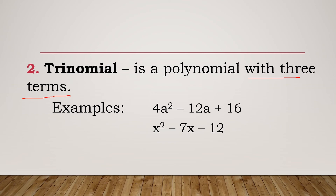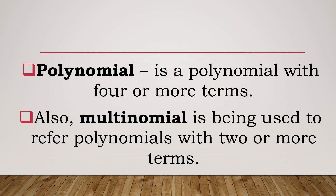Next is trinomial — a polynomial with 3 terms. For example, 4a² - 12a + 16 has three terms: 4a², -12a, and 16. Also, x² - 7x - 12 is another example of a trinomial. The word 'polynomial' is also used to name polynomials with 4 or more terms, and 'multinomial' refers to polynomials with 2 or more terms.